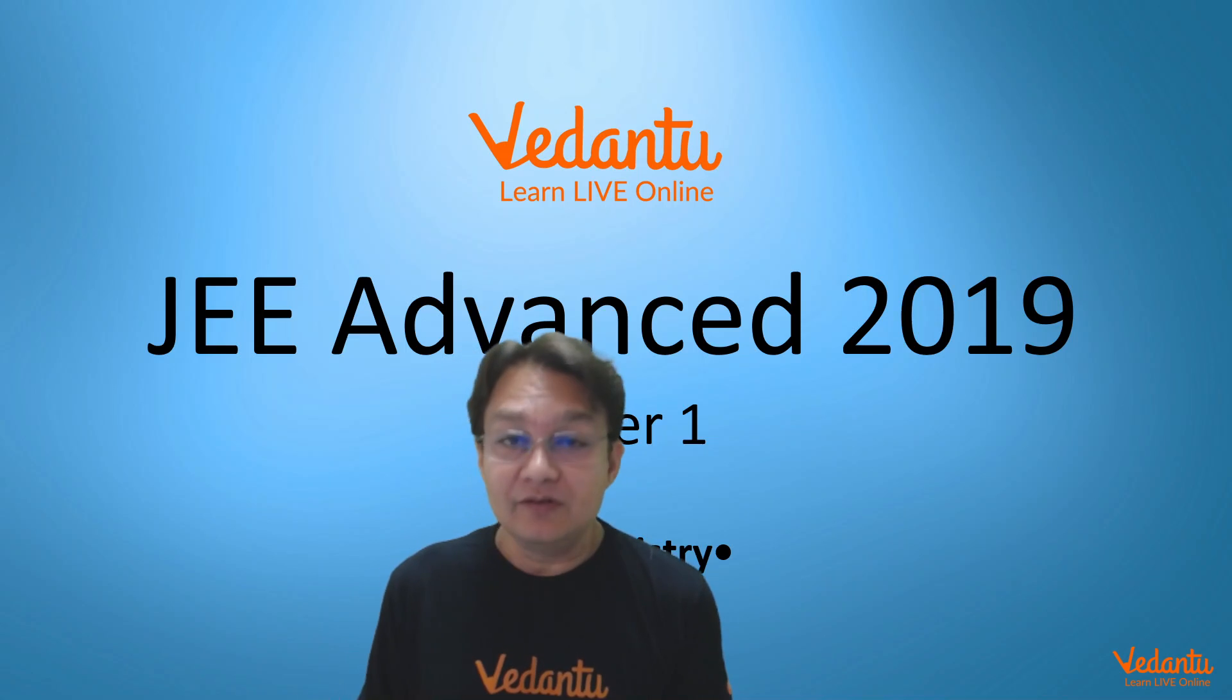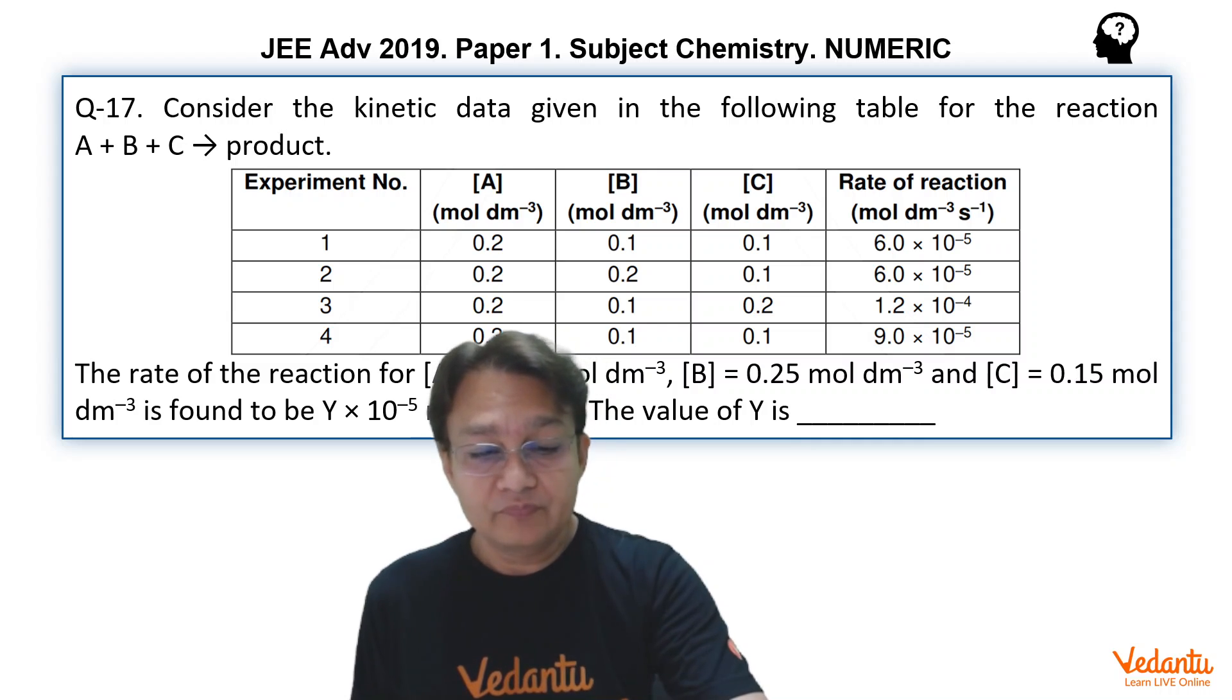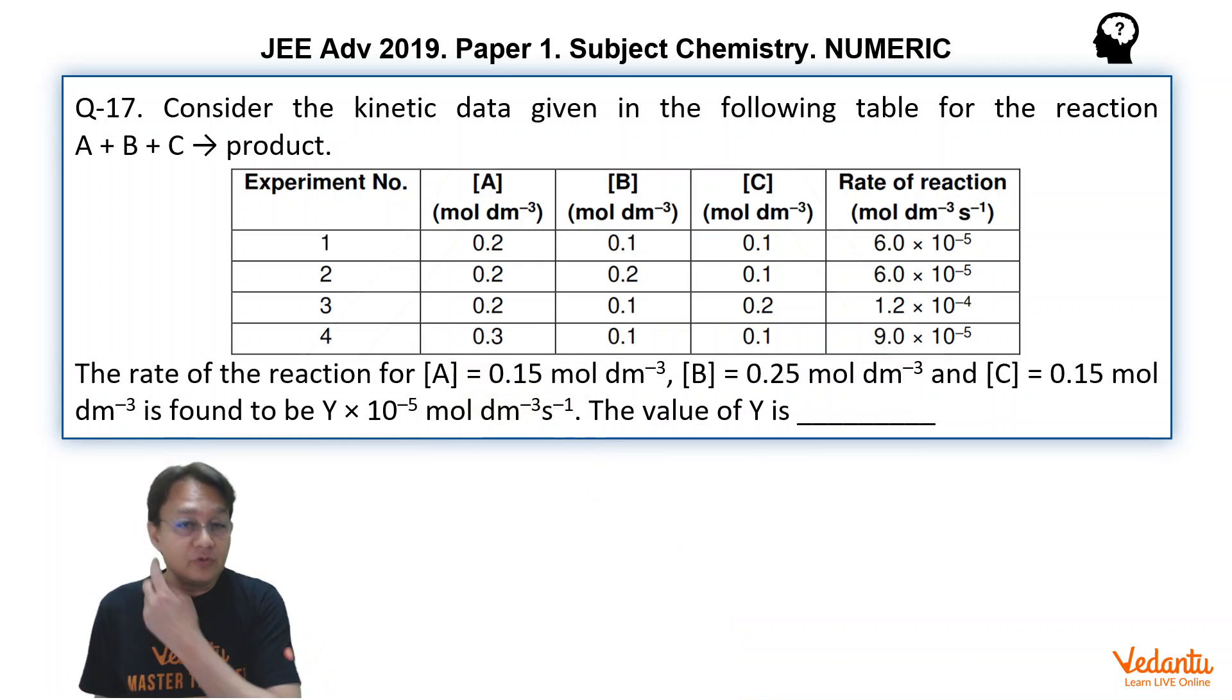So let's see what is this problem. The problem is: consider the kinetic data given in the following table for the reaction A plus B plus C changing into product.